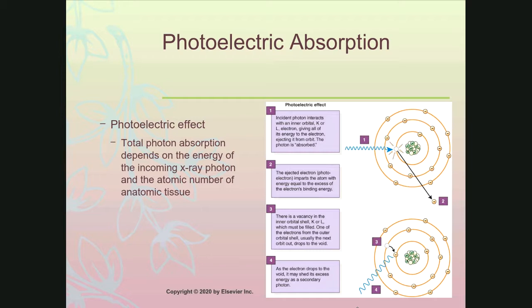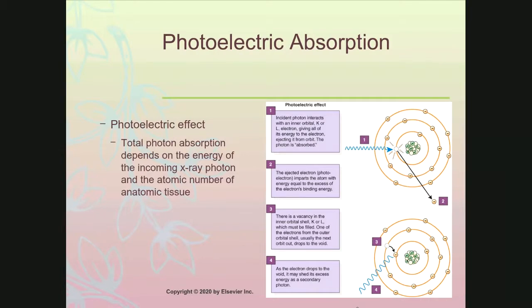Those secondary photons created are typically of low energy, but still radiation nonetheless, and are typically absorbed in the body within about one to two millimeters of where they take place. So wherever you have photoelectric absorption — like in bone, or in barium, or in iodine contrast media — you also have secondary radiation being created. Calcium has atomic number 20, barium is atomic number 56, and iodine is atomic number 53. When you use contrast media, you're talking about much higher secondary radiation being created in the patient.